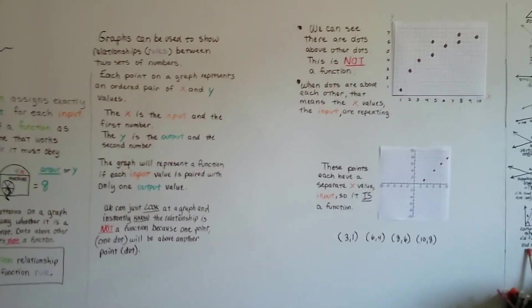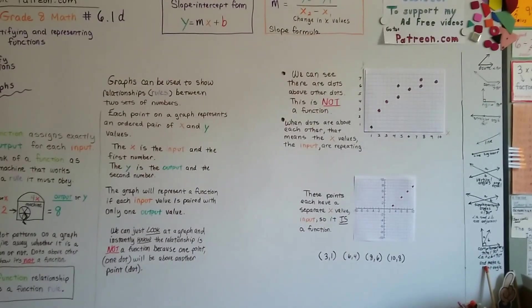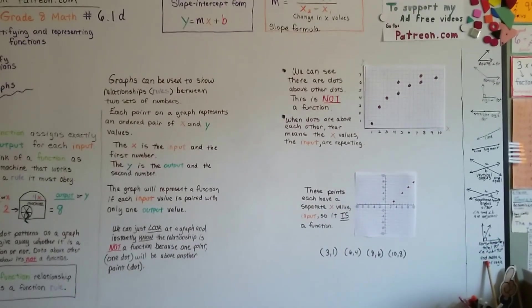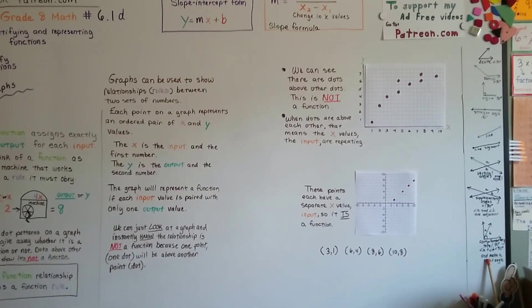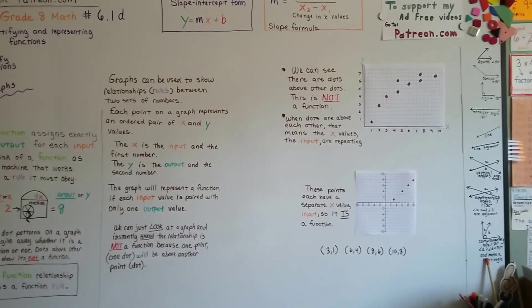Now, there's another way to tell, and it's called the vertical line test. And we're going to talk about that in the very next video, 6.1e. And it's a widely used way to see if it's a function or not. The vertical line test. Hope to see you there. Bye.